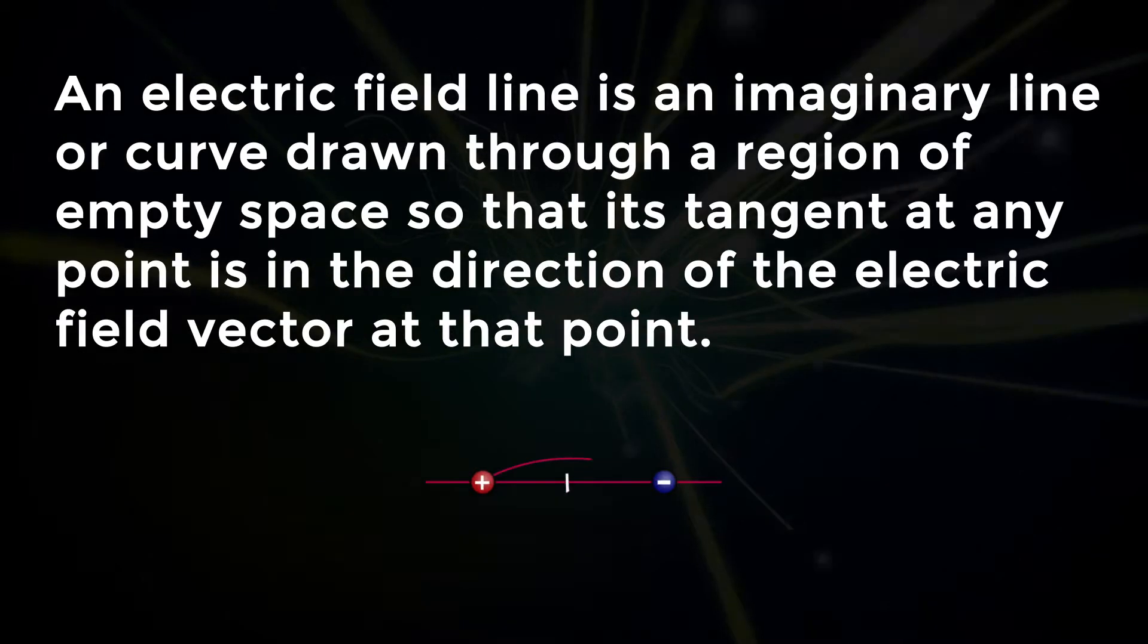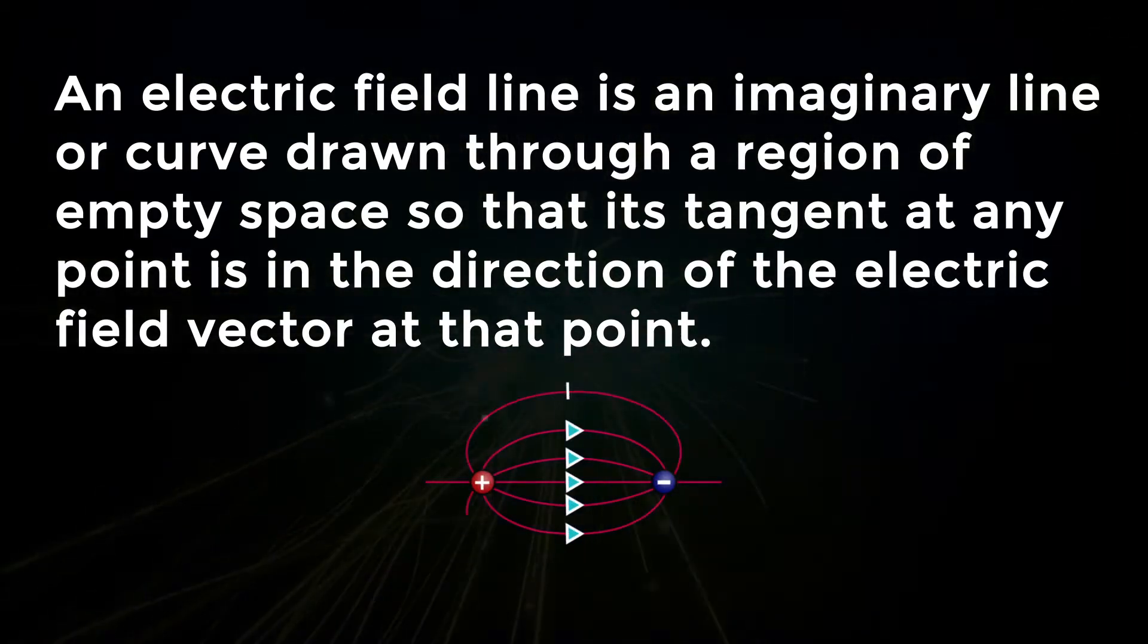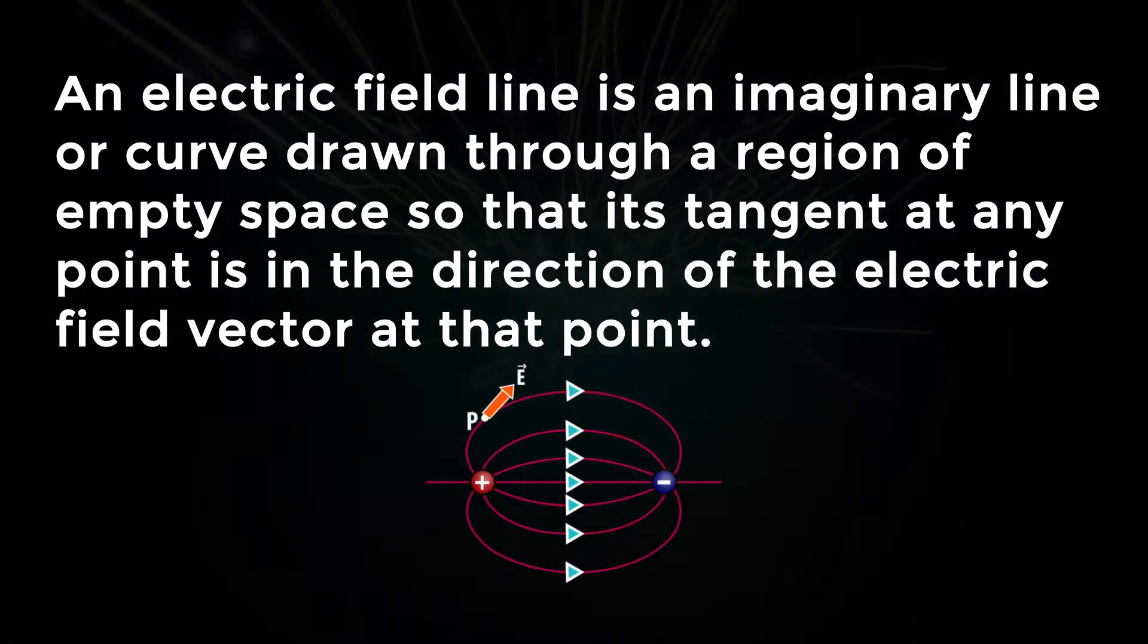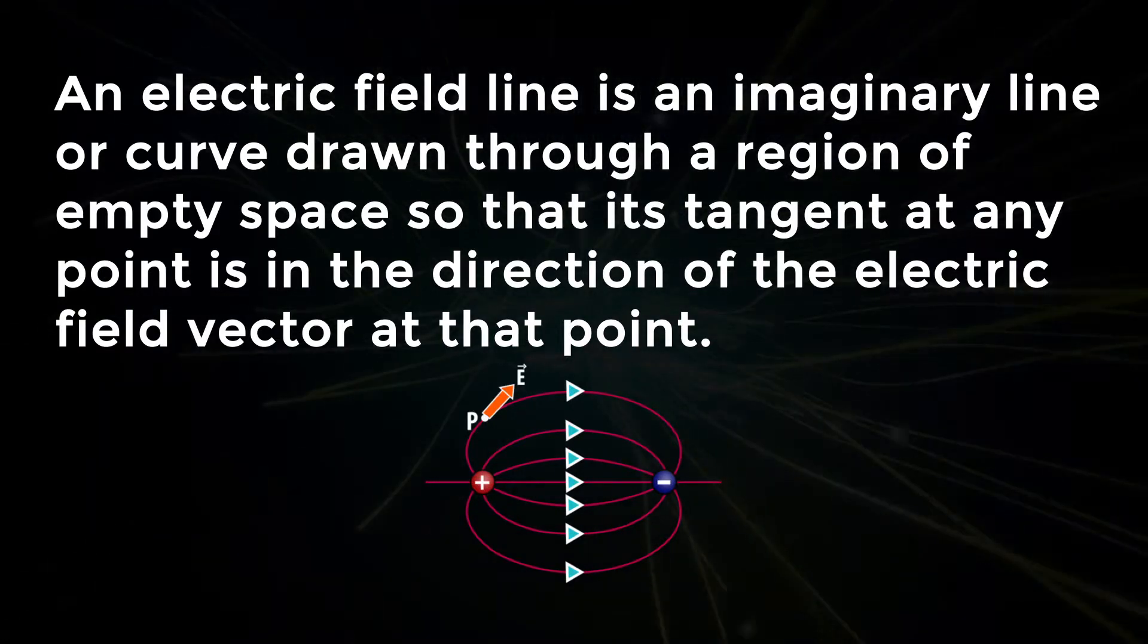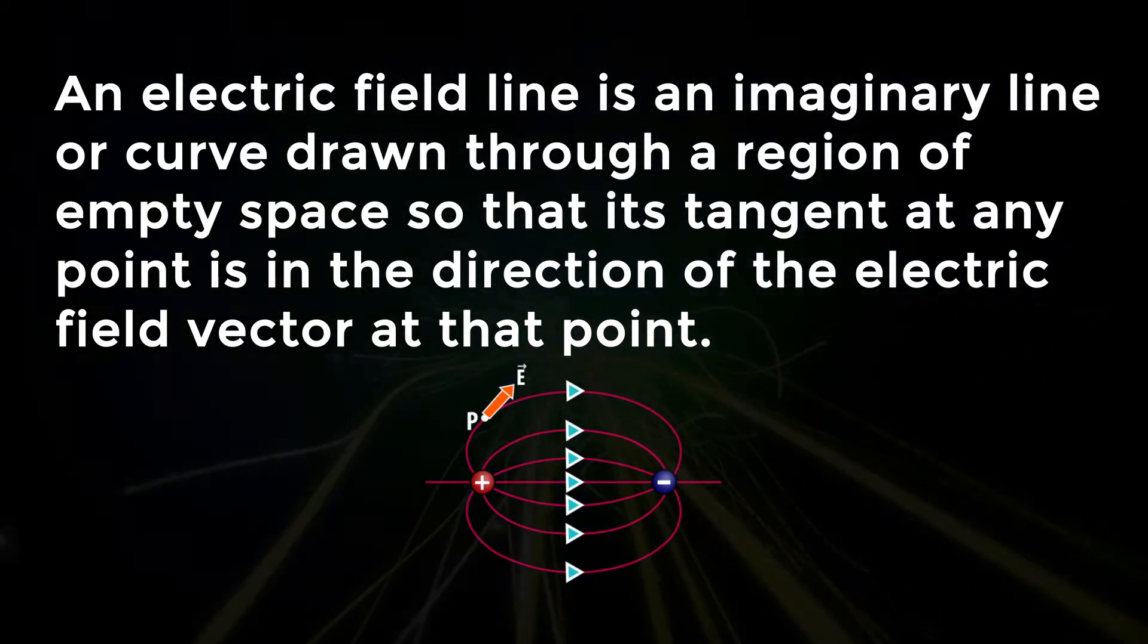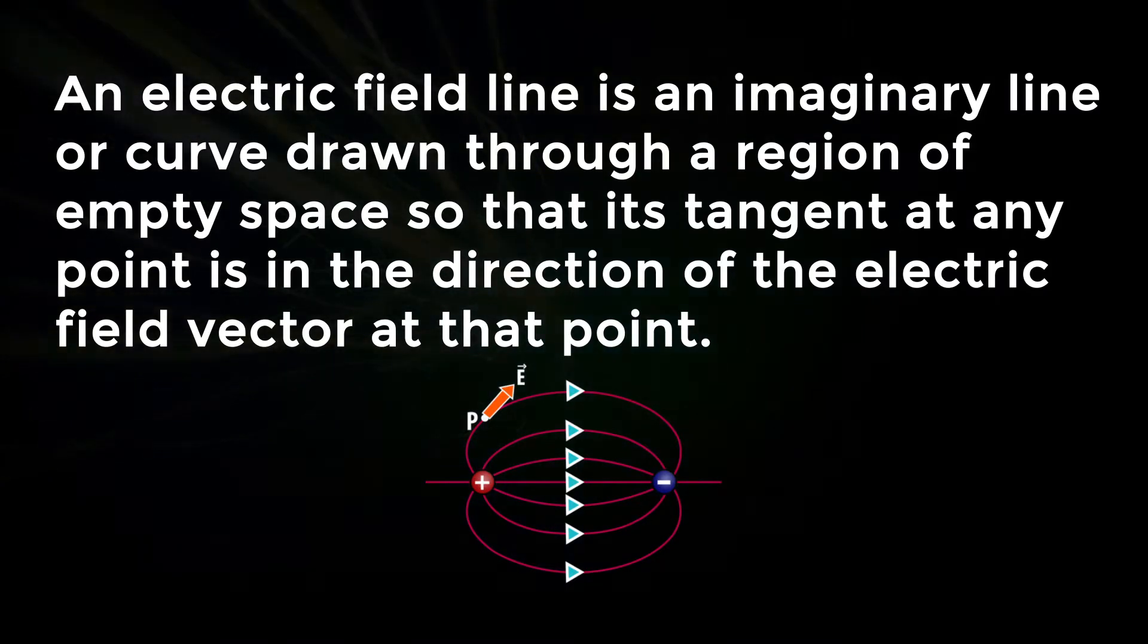An electric field line is an imaginary line or curve drawn through a region of empty space so that its tangent at any point is in the direction of the electric field vector at that point.